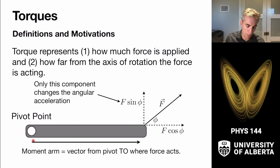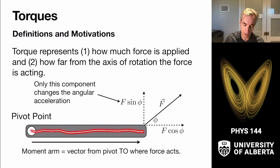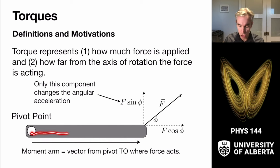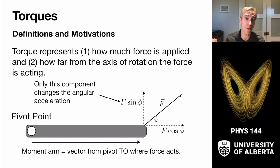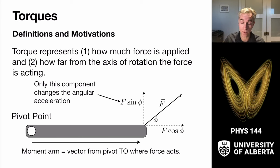The moment arm is the distance from the pivot point where the torque is being calculated out to where that force is acting. It is the vector from the pivot to where the force acts — not from force to pivot. It goes from the pivot point to wherever the force is acting on an extended object.